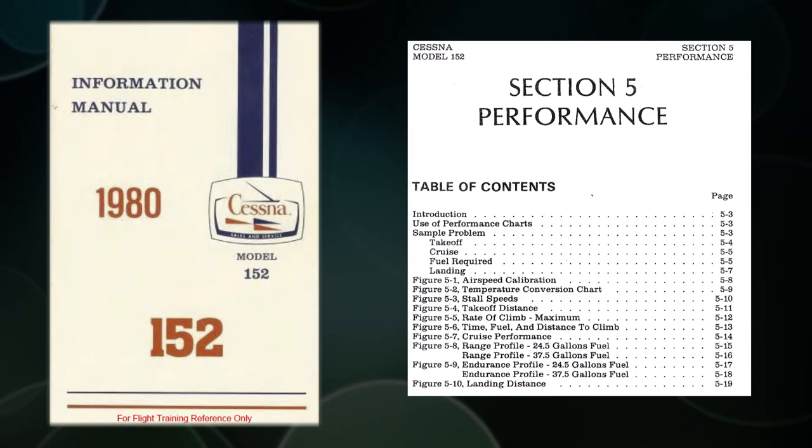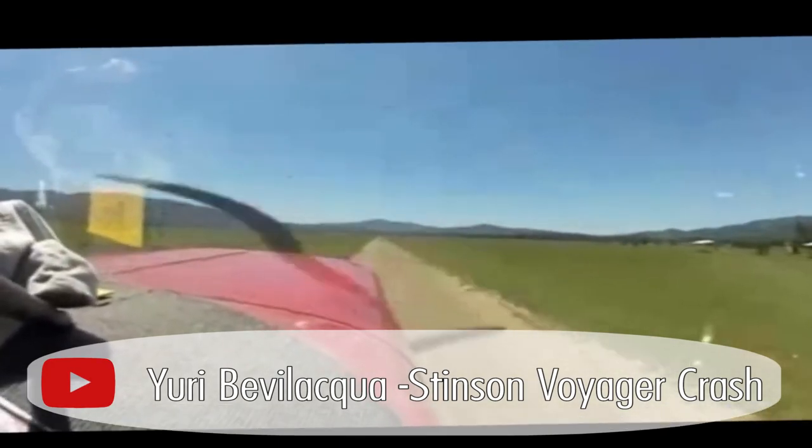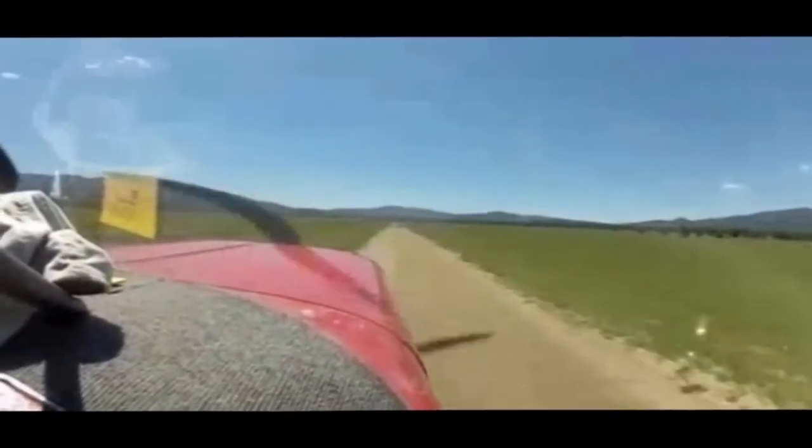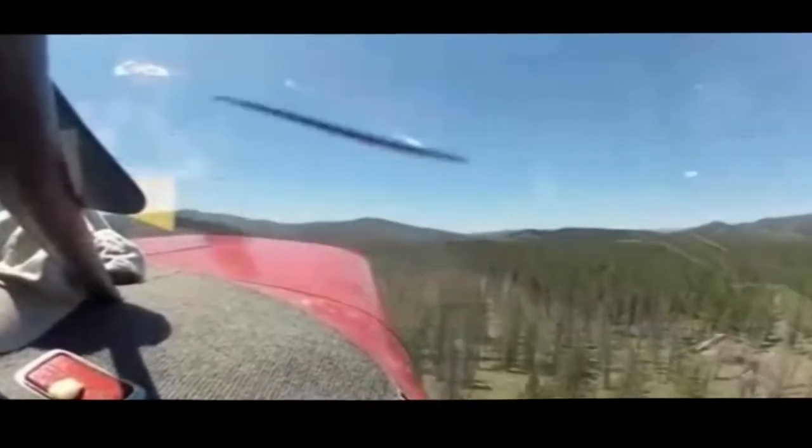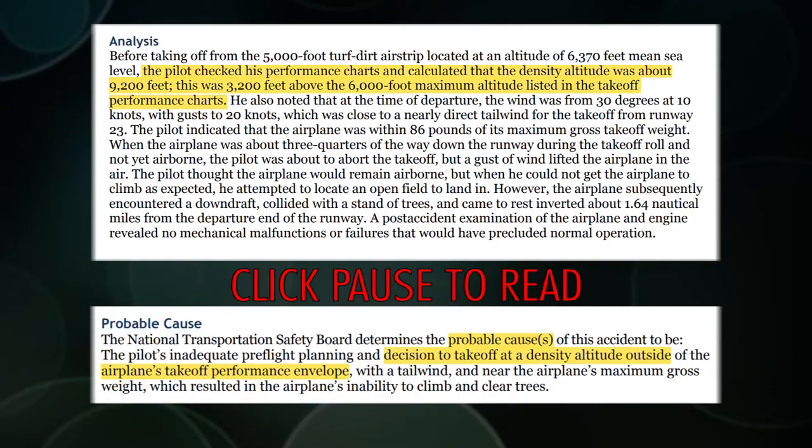And if you think you're too cool to calculate some performance figures, this is something that can happen to you. You can see in this video the airplane is starting to take off, trying to get airborne, but it can barely maintain its altitude and eventually it finds some trees and things don't exactly end well. Feel free to pause and read the NTSB findings for that particular crash.